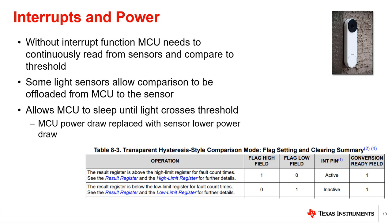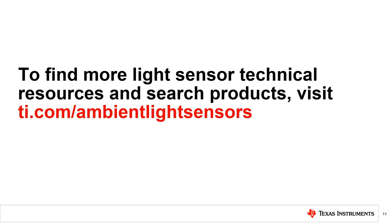In light sensors without an interrupt functionality, the microprocessor must continually read from the sensor and compare it to the threshold. Some light sensors, such as TI's light sensor portfolio, support integrated comparisons with programmable thresholds, different types of interrupt modes, and support an interrupt pin. These features allow the microprocessor to sleep and only wake up to take action when the light level crosses the threshold between day and night, greatly reducing the MCU active time.